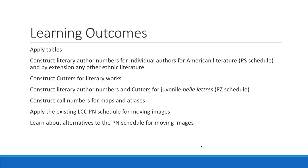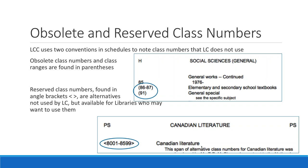A couple of things helpful to know: obsolete and reserved class numbers appear throughout the schedules. When you see a number in parentheses, that means it's obsolete — LC has decided to no longer use that number or range. It was correct when used, so you will find materials on your shelf with those class numbers. You should not use an obsolete number because it's not valid right now.